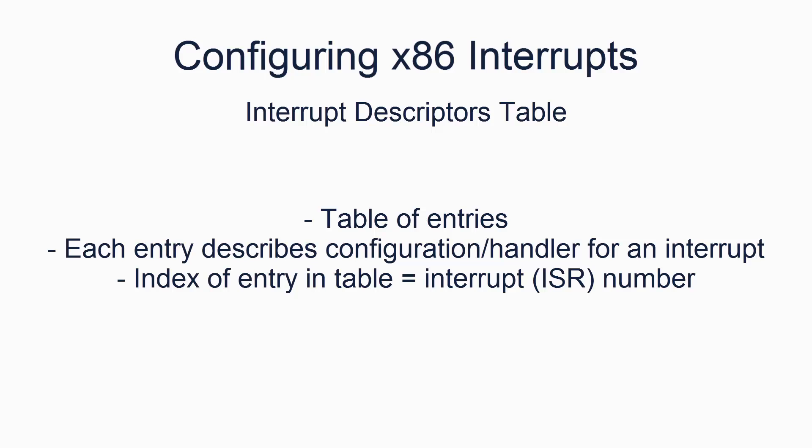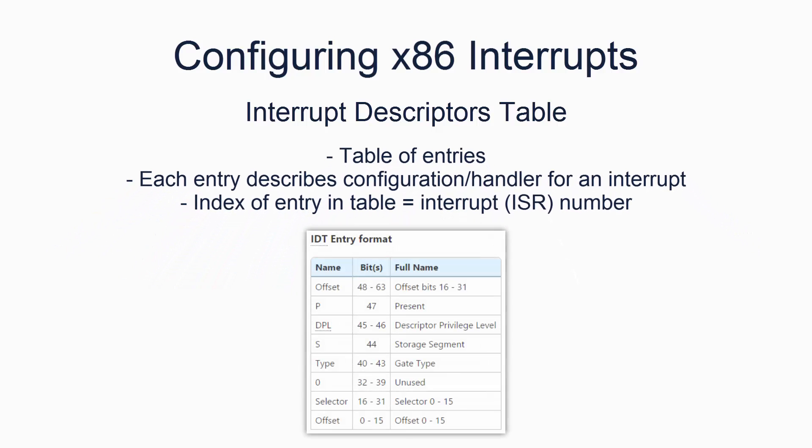Interrupts each have specific numbers. Interrupts 0 to 31 inclusive have special meanings on the x86 processor. Interrupt 0, for example, is the divide by zero interrupt. The processor works out which row of the table corresponds to which interrupt number — often called an interrupt vector — by taking the zero-based index of the row in the table. Each row has a specific format, as shown here.